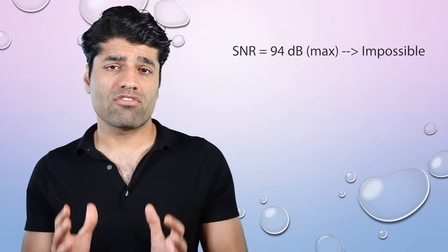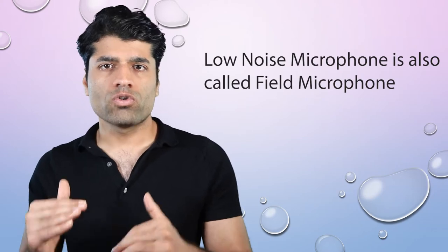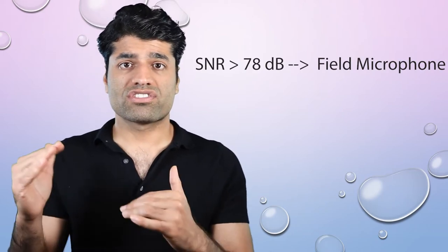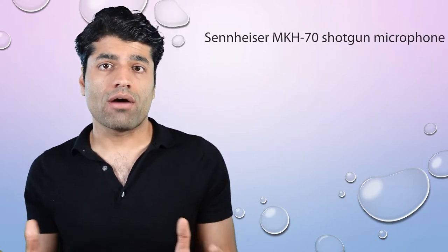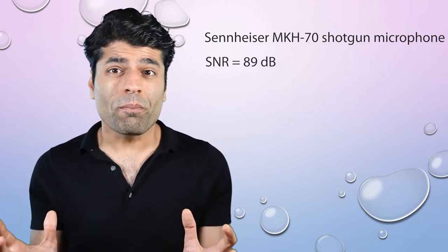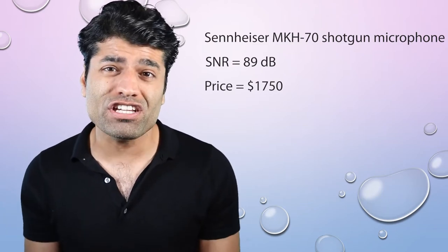On the other hand, it is impractical to have a microphone with an SNR value of 94 dB. But if you want to record a very soft sound source, then an SNR of 84 dB and above gives an unnoticeable level of self noise. Very low noise microphones are also called HiFi microphones, with an SNR value of 78 dB and above. One of the quietest microphones I have come across is the Sennheiser MKH 70 shotgun microphone with a whopping SNR of 89 dB and a price tag of $1,750 US dollars.